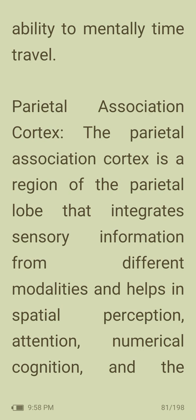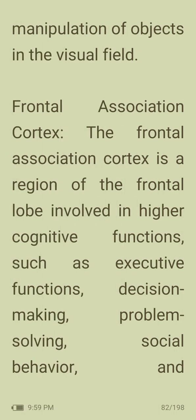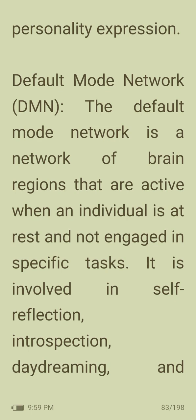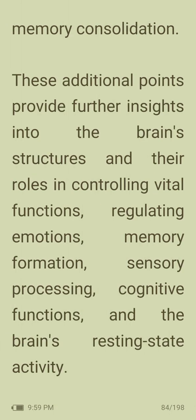Parietal association cortex: a region of the parietal lobe that integrates sensory information from different modalities, helping in spatial perception, attention, numerical cognition, and the manipulation of objects in the visual field. Frontal association cortex: a region of the frontal lobe involved in higher cognitive functions such as executive functions, decision making, problem solving, social behavior, and personality expression. Default mode network: a network of brain regions active when an individual is at rest and not engaged in specific tasks, involved in self-reflection, introspection, daydreaming, and memory consolidation.